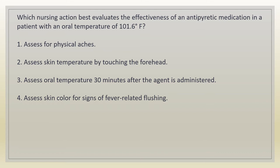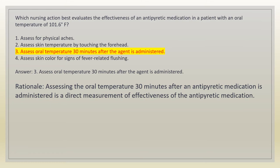Which nursing action best evaluates the effectiveness of an antipyretic medication in a patient with an oral temperature of 101.6 degrees Fahrenheit? 1. Assess for physical aches. 2. Assess skin temperature by touching the forehead. 3. Assess oral temperature 30 minutes after the agent is administered. 4. Assess skin color for signs of fever-related flushing. Answer: 3. Assess oral temperature 30 minutes after the agent is administered. Rationale: assessing the oral temperature 30 minutes after an antipyretic medication is administered is a direct measurement of its effectiveness.